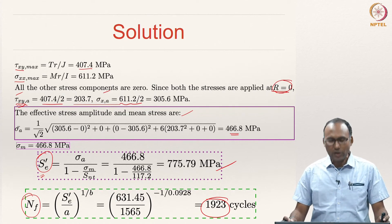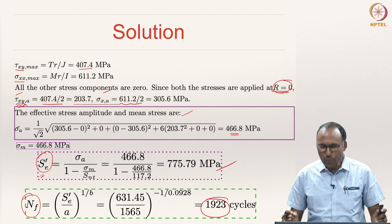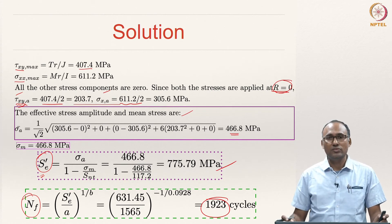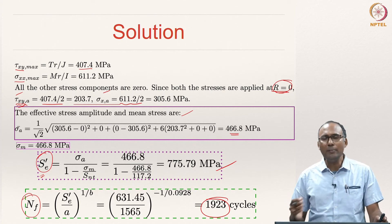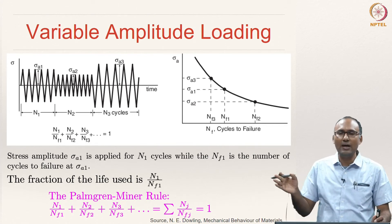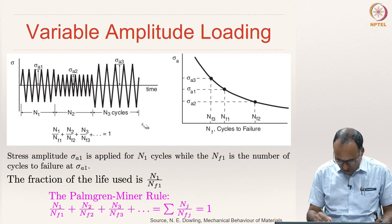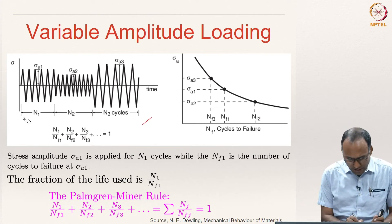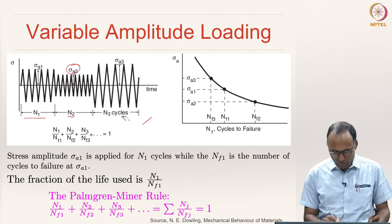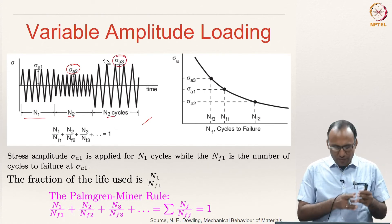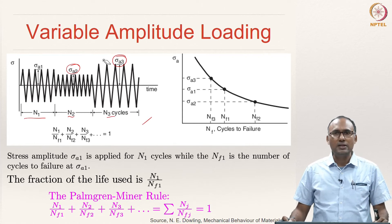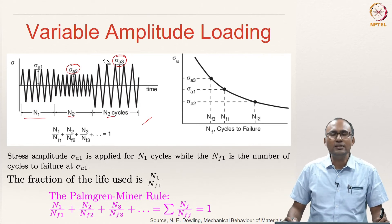Until now, the kind of problems we have dealt with have the same stress amplitude — the stress amplitude is uniform. However, in real systems you may also have variable amplitude loading, meaning during loading the stress amplitude might change as shown in this figure. For n1 cycles the stress amplitude is sigma a1, for n2 cycles the stress amplitude is sigma a2, for n3 cycles the stress amplitude is sigma a3. How does one estimate failure in such systems?